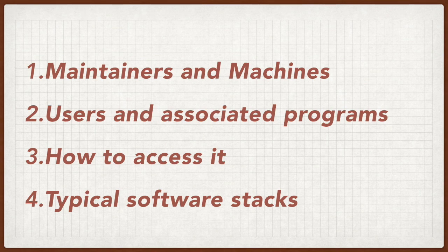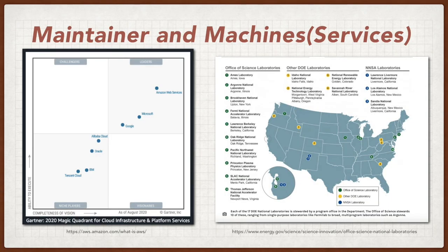Generally speaking, the common theme between cloud computing and HPC is that you try to run your program on multiple machines, such as hundreds or thousands of computers. Obviously, one person or small institution does not have enough funds and capabilities to construct a cluster containing a large amount of machines. So these machines or clusters are usually maintained by specialized institutions. Let's first look at the difference for institutions that maintain the machines or computing nodes used for cloud computing and HPC.